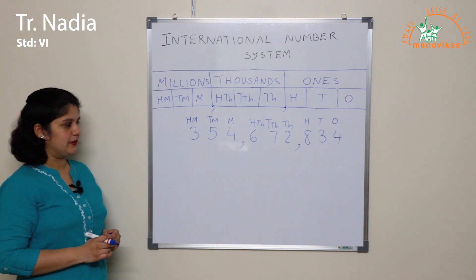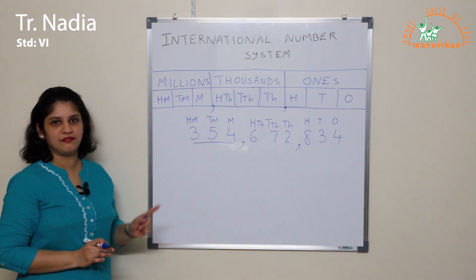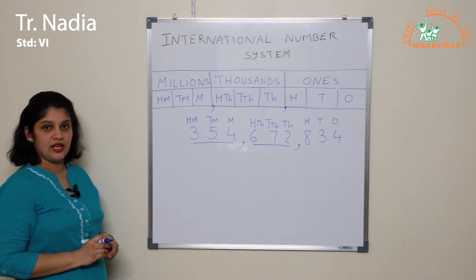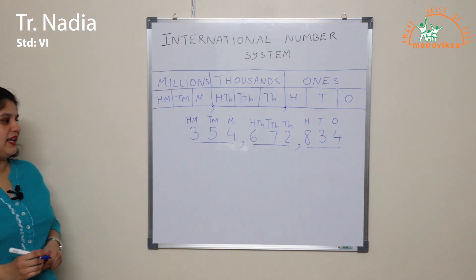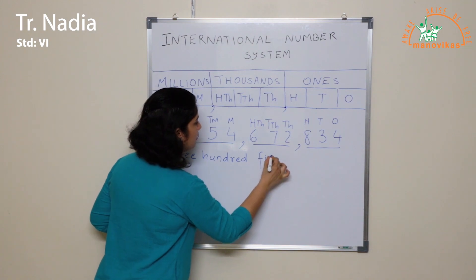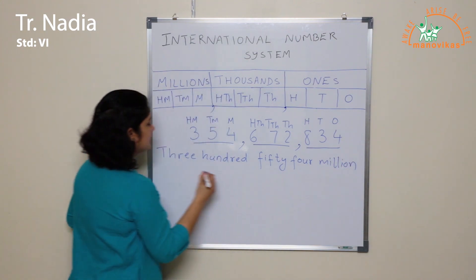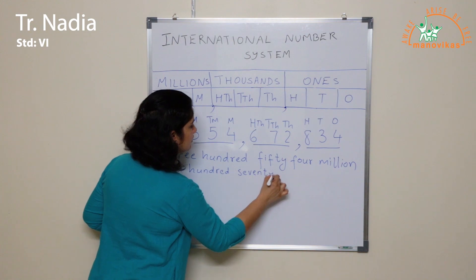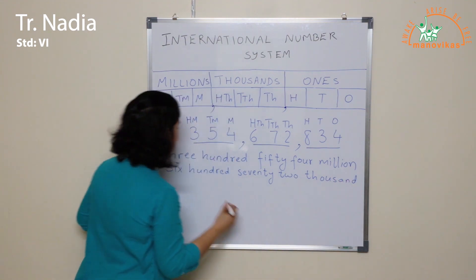Now how do you read this number? The millions are read together. In this number, how many millions do we have? We have 354 million. How many thousands do we have? We have 672 thousand. And how many ones do we have? We have 834. So we write the number as 354 million, 672 thousand, 844.